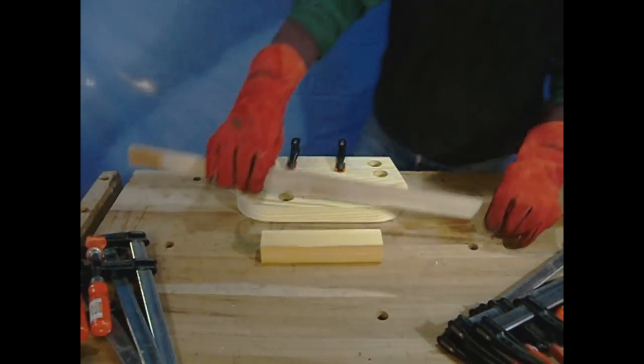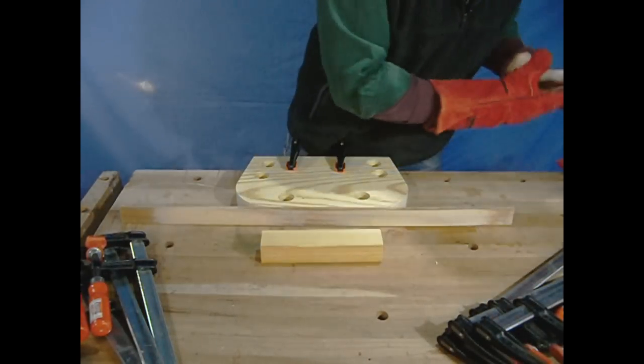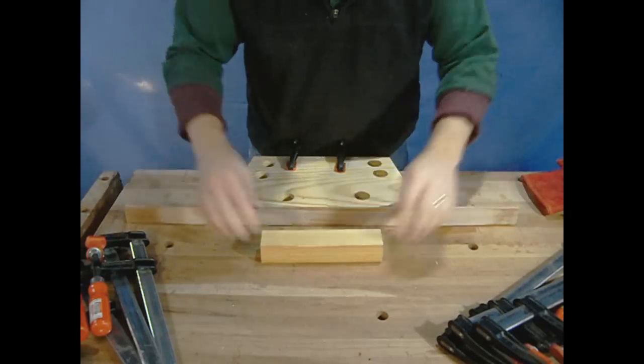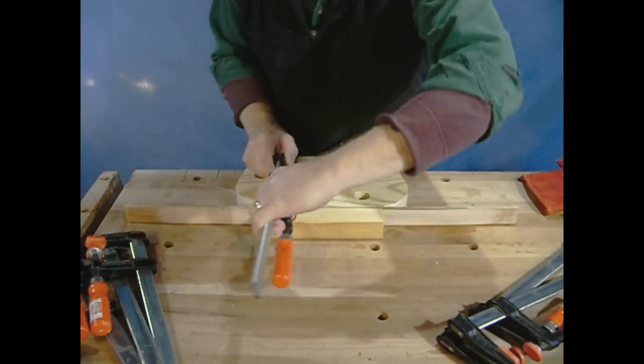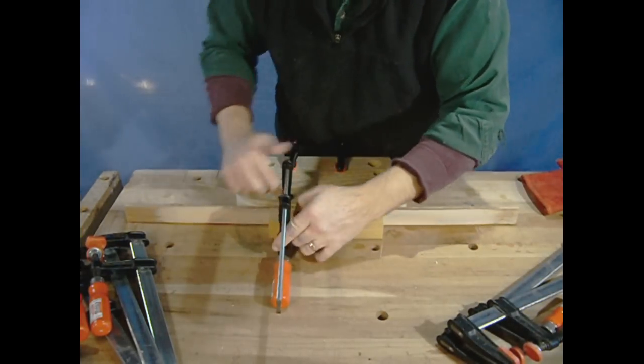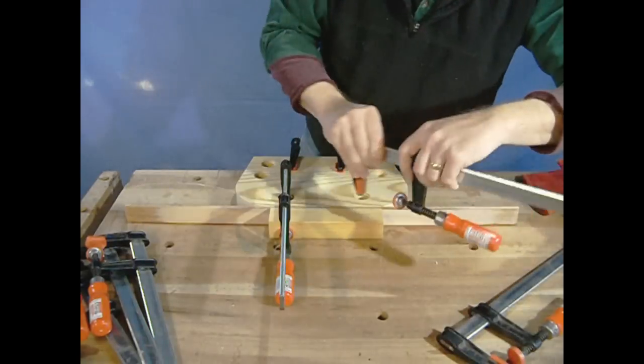You're going to want everything ready before you pull your parts out of the steam box and start to bend them around a form. There's a very narrow window of opportunity to get the bending done and get the part clamped around your form before it starts to stiffen up again.